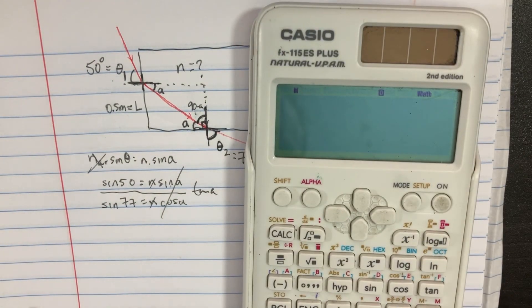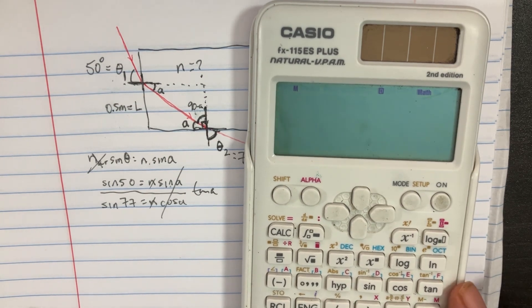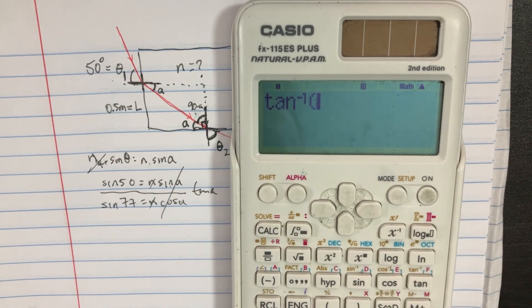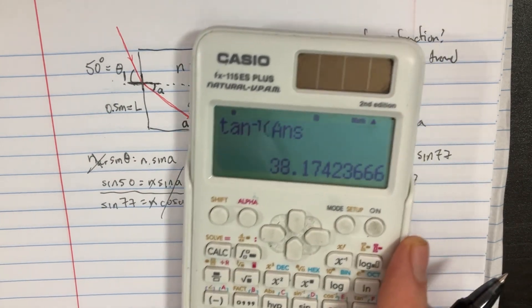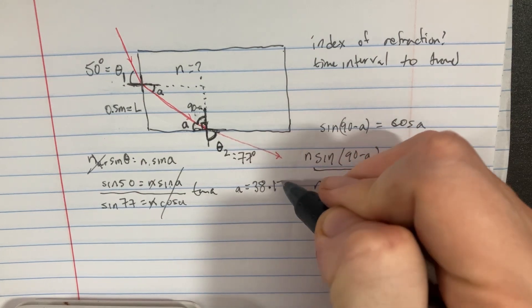So let's take sine of 50 divided by the sine of 77, and let's take the arc tangent. So that gives us the angle A. A is equal to 38.174.